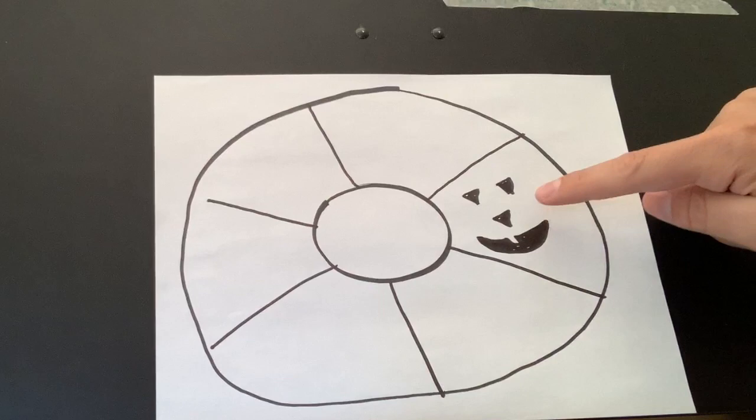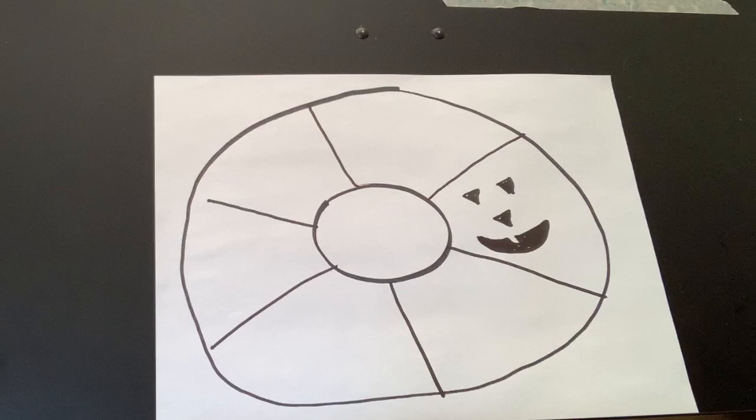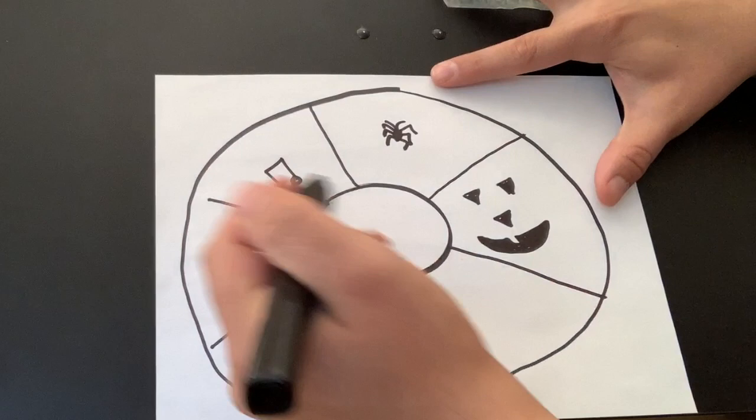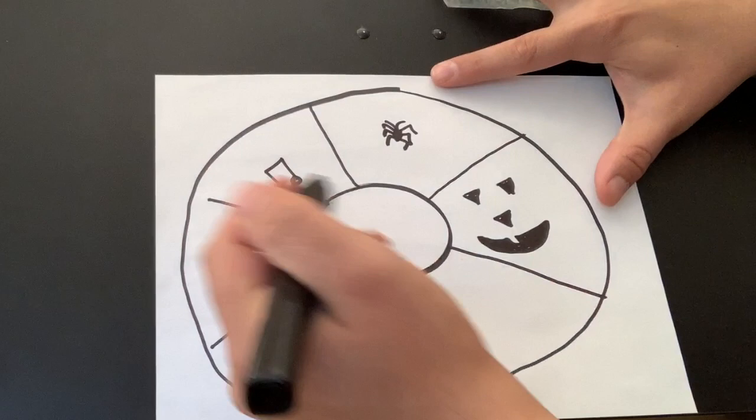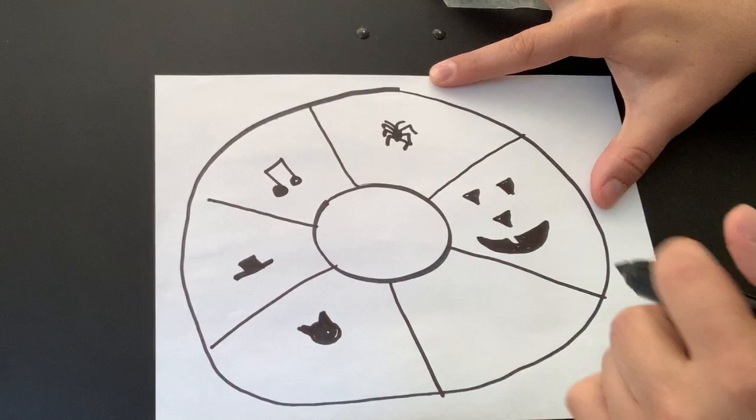Now, in the other spaces, I get to put any other little objects that I want. So, I think I'll put a spider over here, some music notes over here, a hat over here, a cat over here, and an apple over here. You can put any objects you want. That's what I picked.